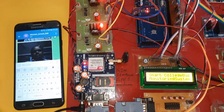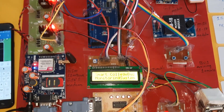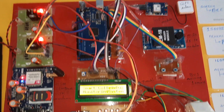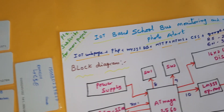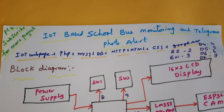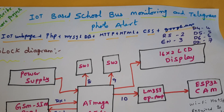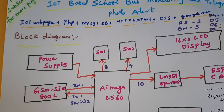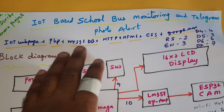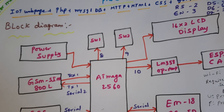Smart college bus monitoring system using Arduino with GPRS modem. In this project we are using an IoT-based smart school college bus monitoring system with Telegram photo alert, IoT webpage, PHP, MySQL database, HTTP, HTML, and Google Maps.